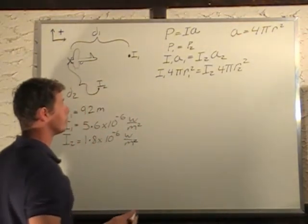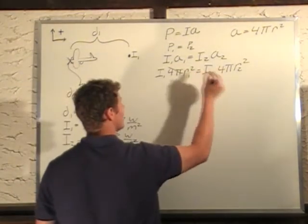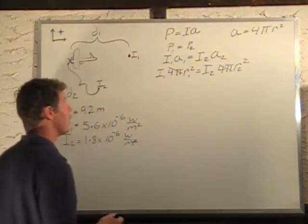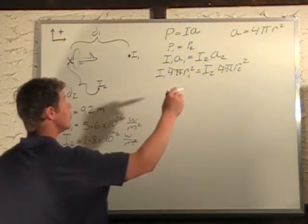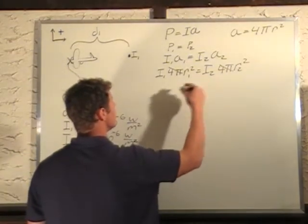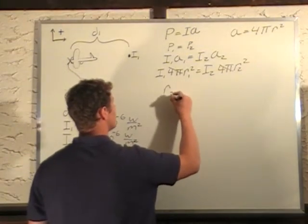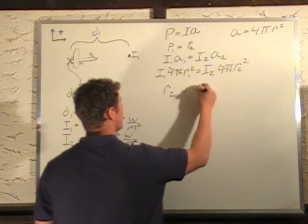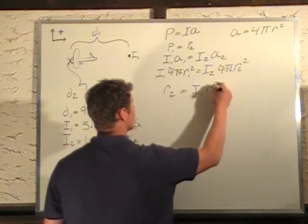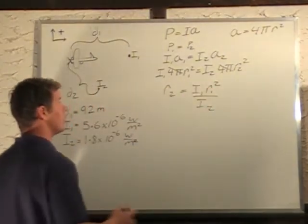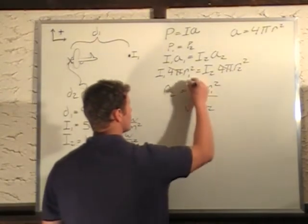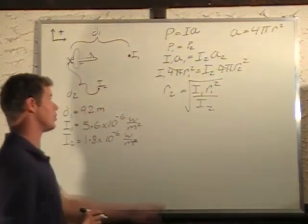If we do a little magic here, we have 4 pi canceling, and we're looking for r2. R2, so we can just basically solve for r2, is I1 r1 squared divided by I2, because I just divided I2 over, and then take the square root of both sides, giving me r2 is that.